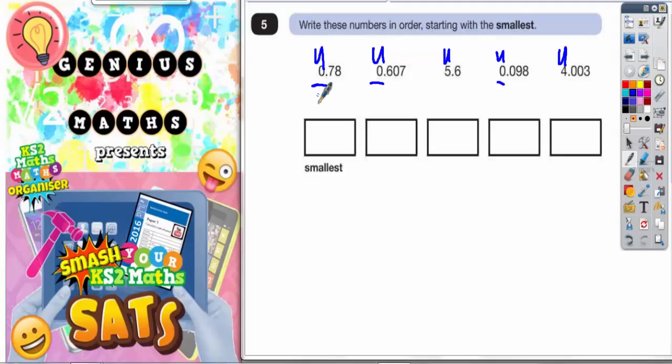So what we need to do now is to only look at these three numbers. Now these three numbers have all got different numbers of digits after the decimal point. So this one's only got two digits, this has got three digits and this has got three digits. Now what we could do is add a 0 here to make this one also have three digits after the point. Okay, so what we need to do now is look at what these three digits are. So we've got 780, 607, 098.